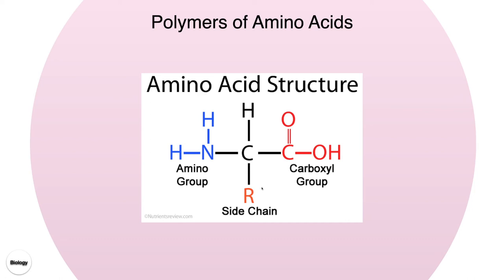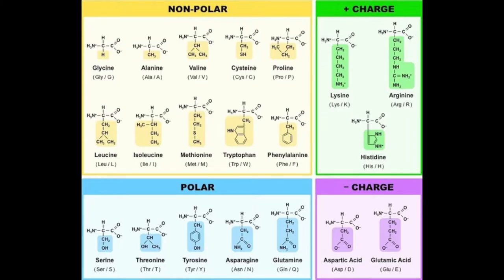Our third reactive group is the R side chain, and this is what's actually different from one amino acid to the next. It determines how the amino acids interact with each other and helps make our protein structures and the shapes they ultimately end up in.